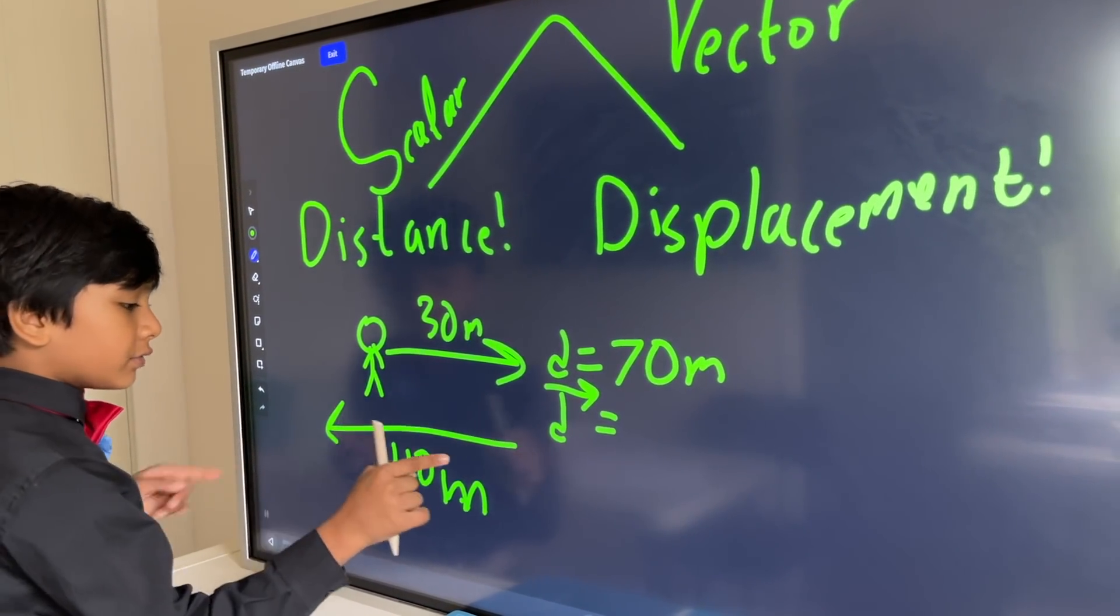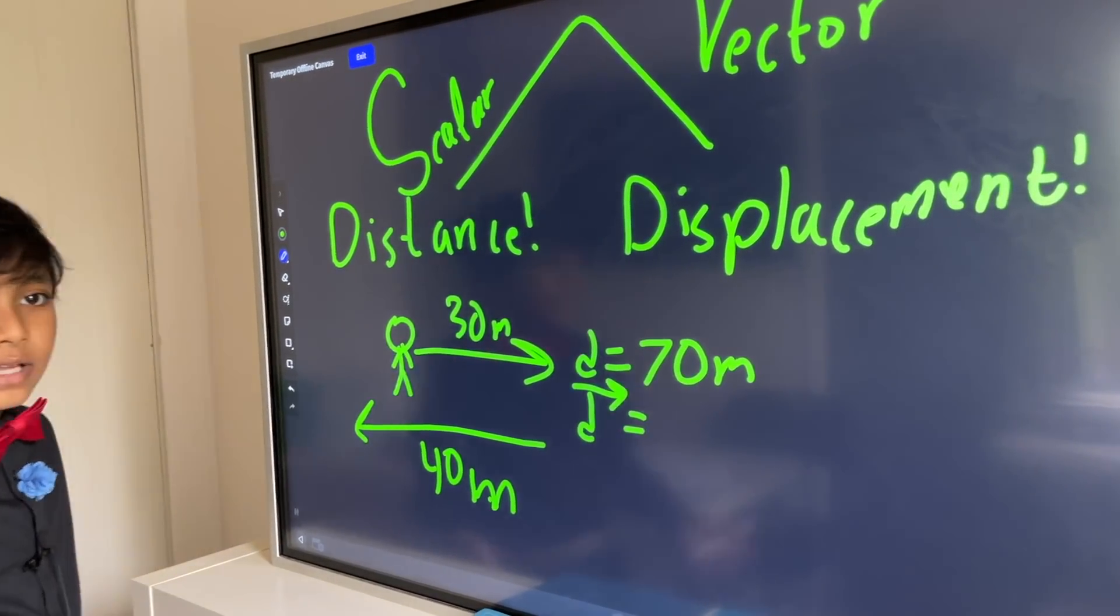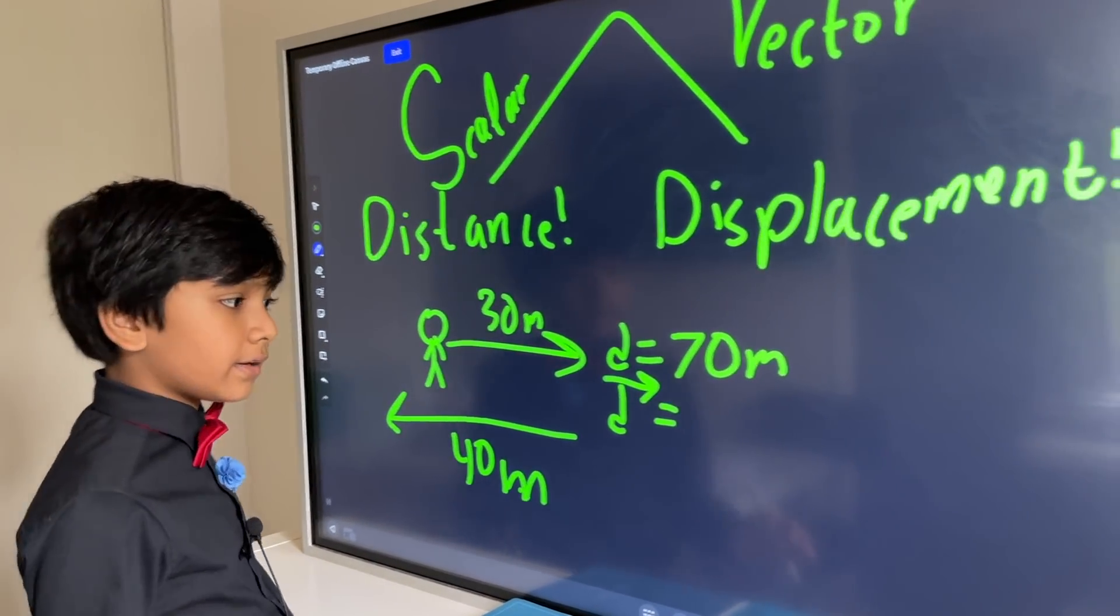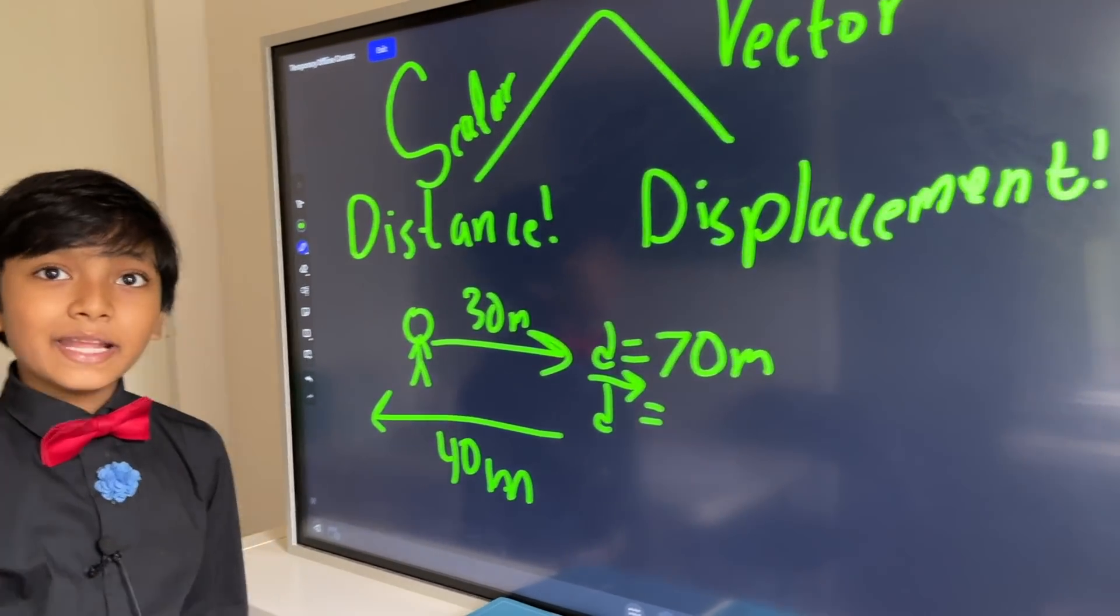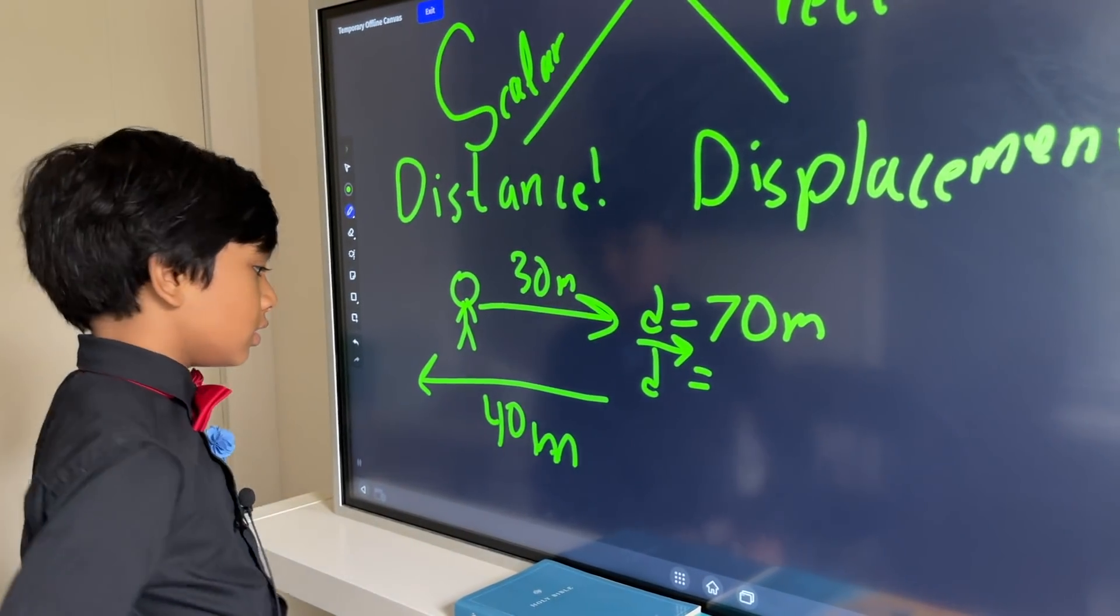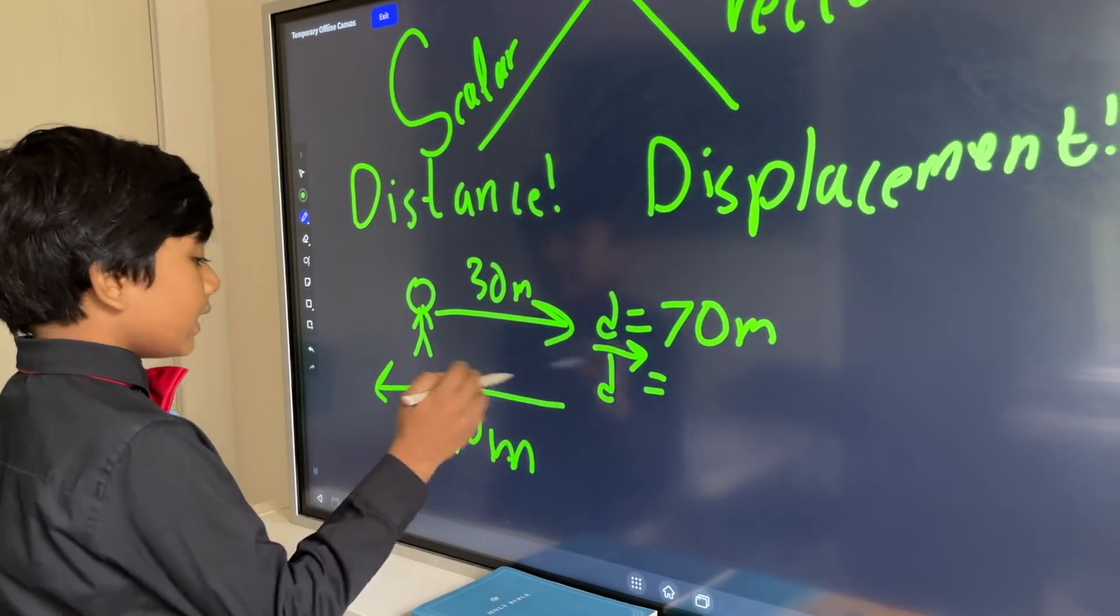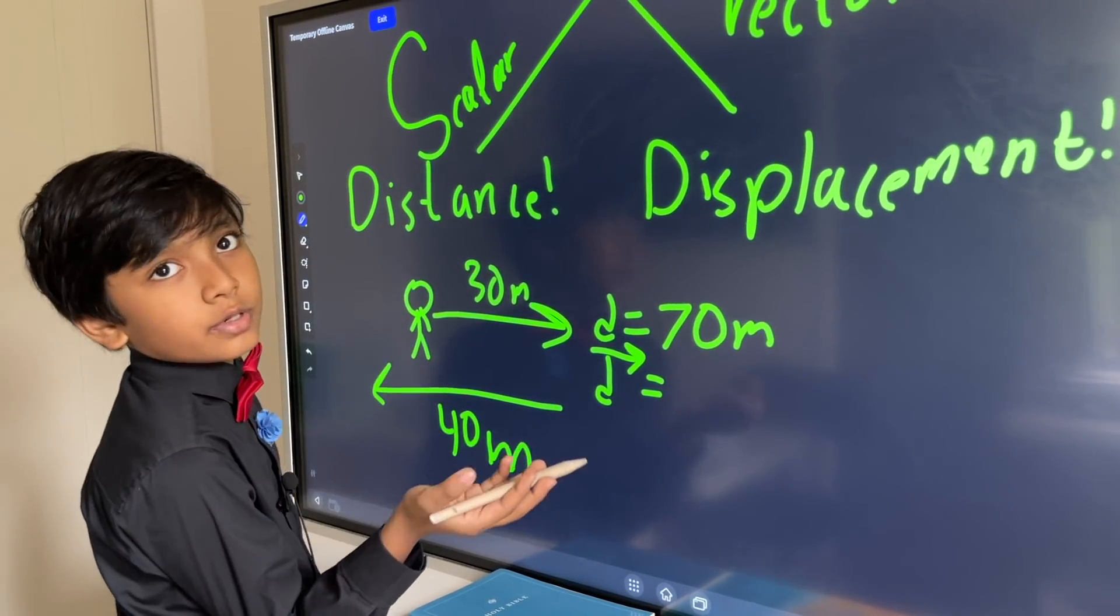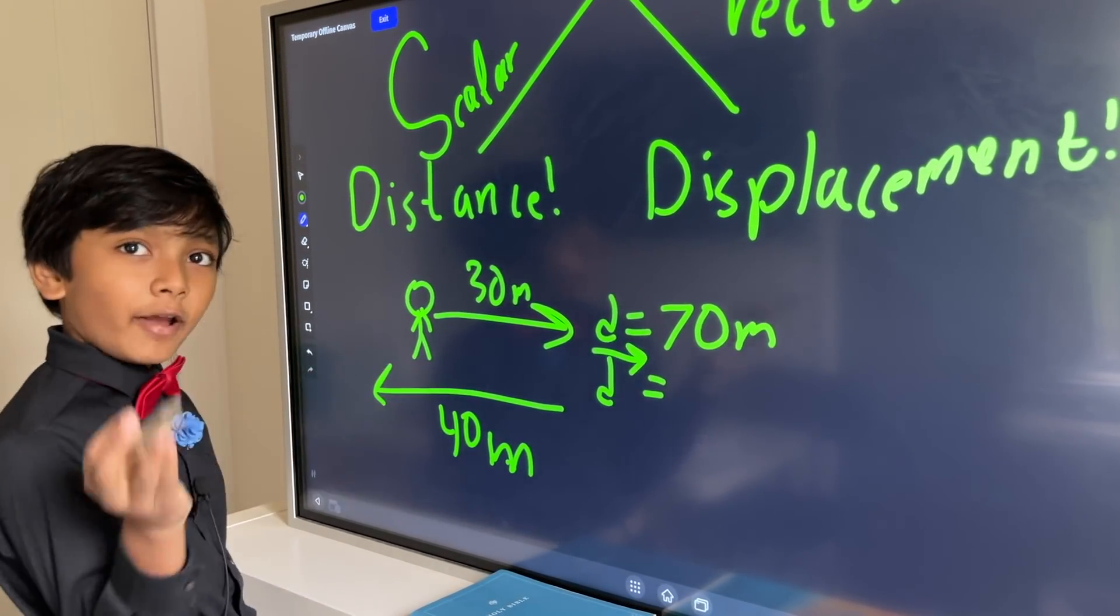That's the length of how much you've traveled. This plus this. It doesn't care about any direction of travel. But, displacement, displacement cares heavily about direction of travel. So, displacement thinks that you are going 30 meters, alright.